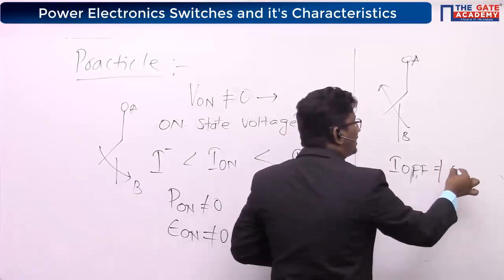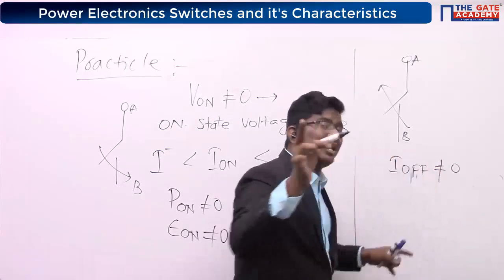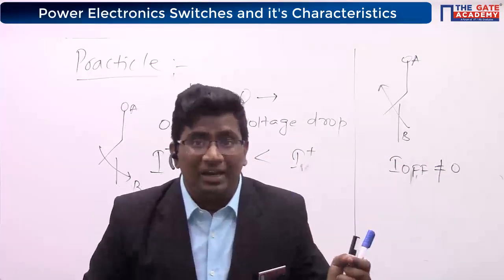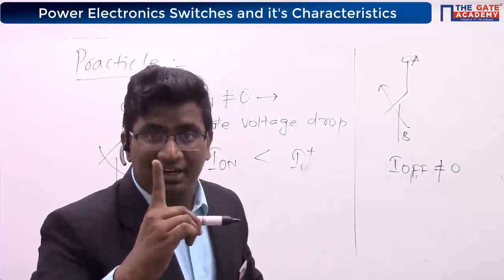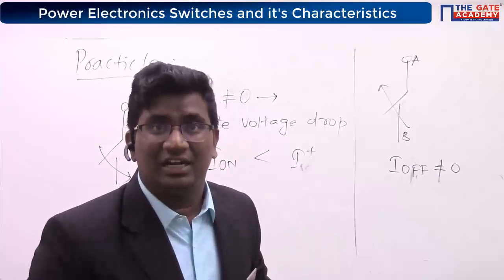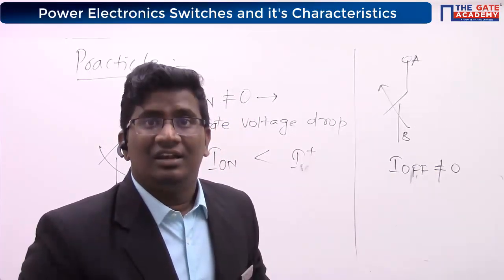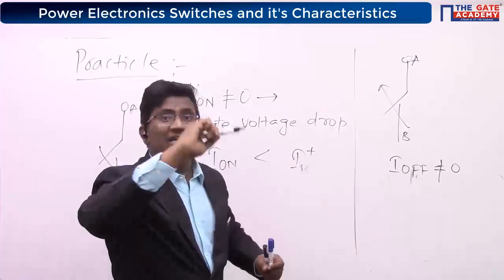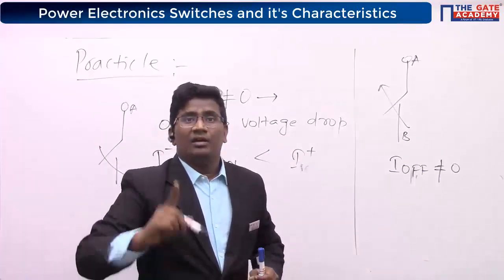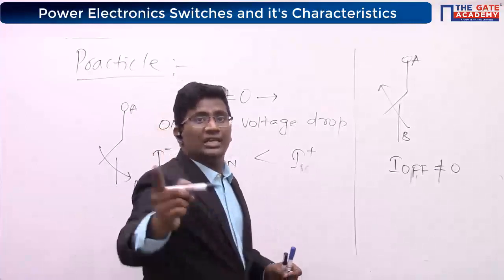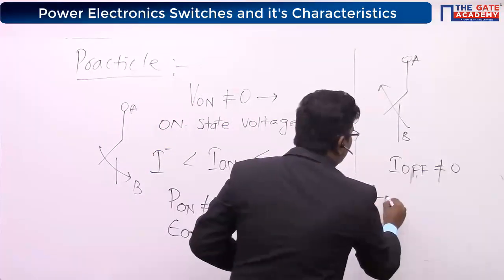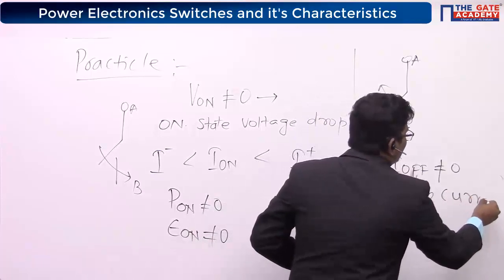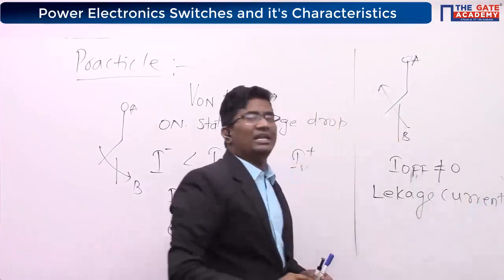Off-state current is also not equal to zero. That particular current flowing even when the switch is open is called leakage current.